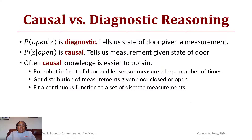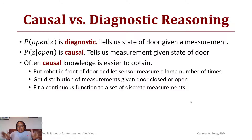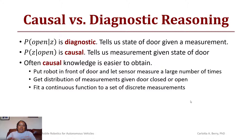Often we say that causal knowledge is easier to obtain because we can get sensor or measurement data from the robot's sensors. You would put the robot in front of the door and let the sensor measure a large number of times with the door either opened or closed, then create a distribution of that sensor data and fit it to a continuous function or discrete measurement — giving you a sensor model based on whether the door is open or closed.